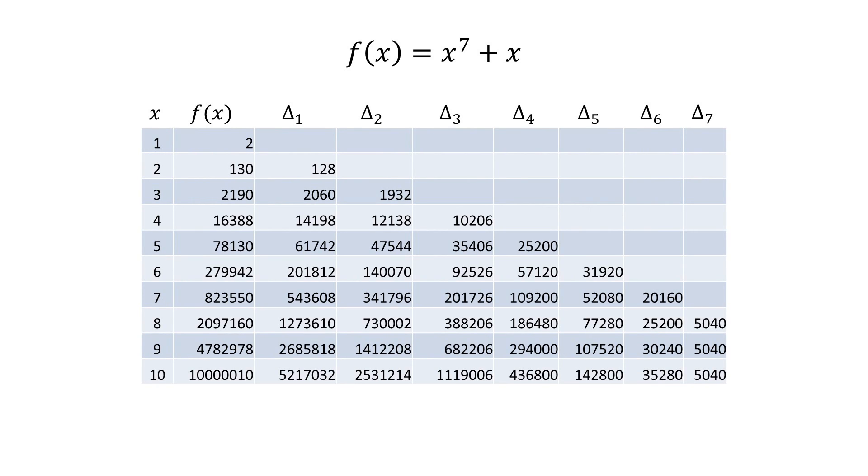Babbage's difference engine number 2 was designed to evaluate polynomials up to order 7. So, a table representing the calculation of a polynomial would have 7 difference columns. For example, this is the table for the polynomial f(x) = x⁷ + x.